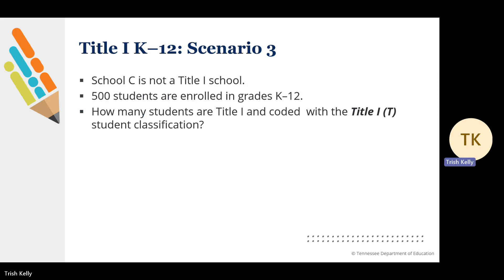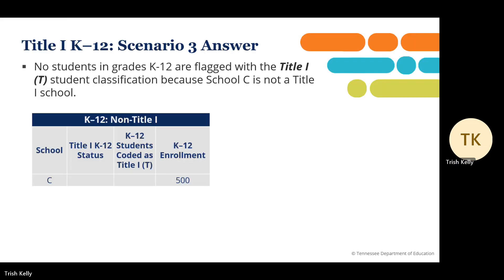Title I K-12 Scenario 3. School C is not a Title I school. 500 students are enrolled in grades K-12. How many students are Title I and coded with a Title I-T student classification? No students in grades K-12 are flagged with a Title I-T student classification because School C is not a Title I school.